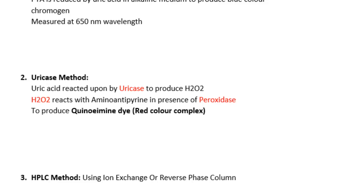Another method is the HPLC method. It is very sensitive but is very costly, so it is not commonly used. In the HPLC method, an ion exchange or reverse phase column is used.